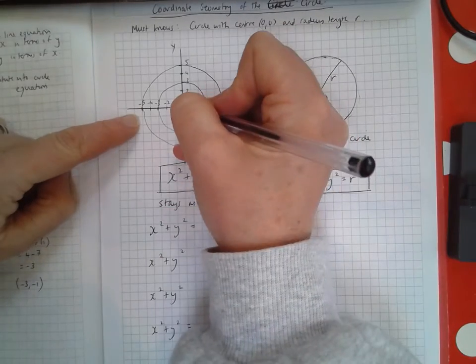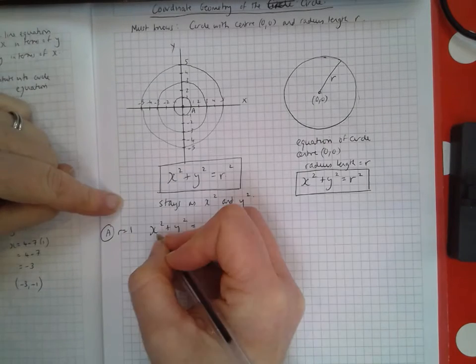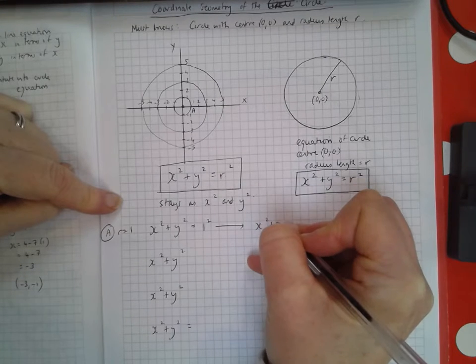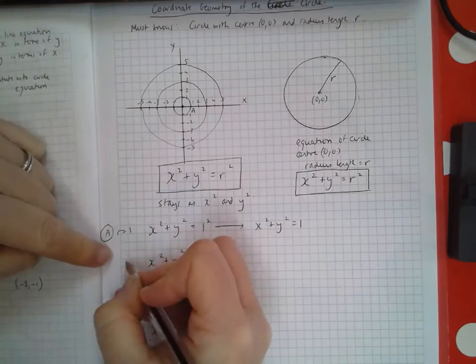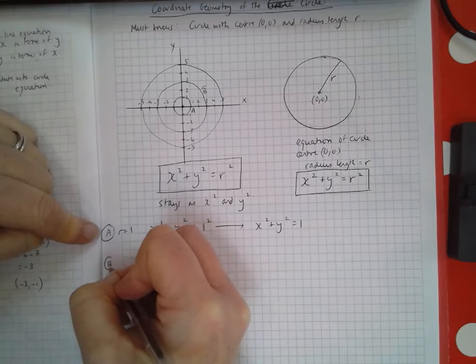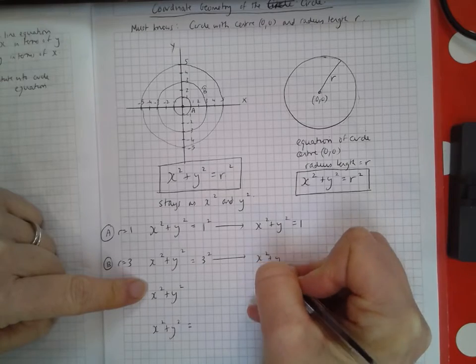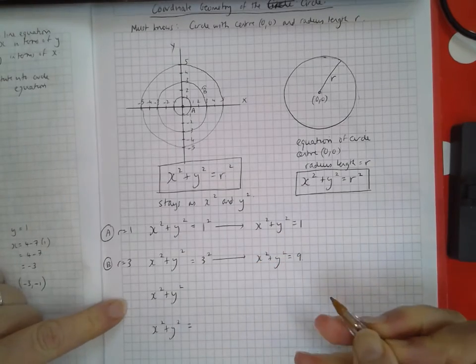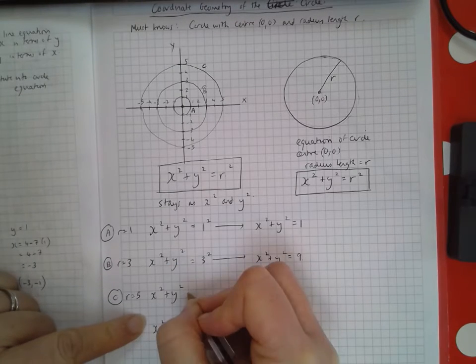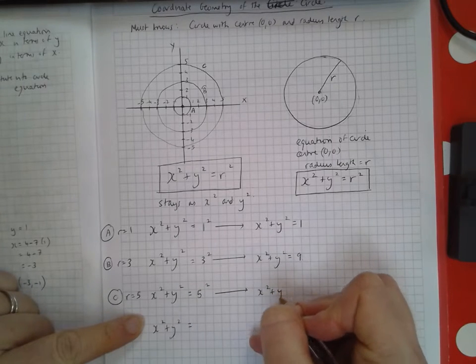For instance, circle A has a radius of 1. Its equation is x² + y² = 1² = 1. Circle B has a radius of 3, so x² + y² = 3² = 9. Circle C has a radius of 5, so x² + y² = 5² = 25.